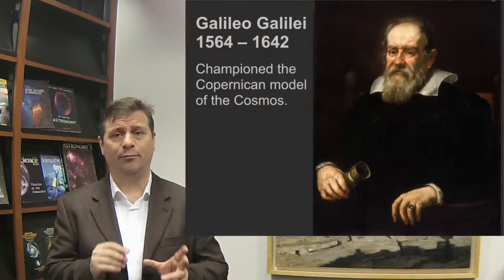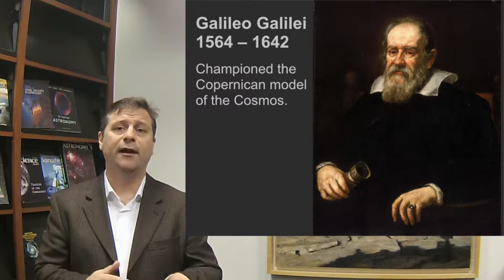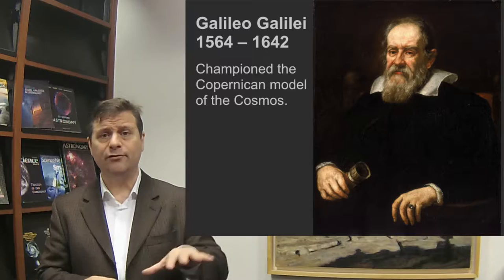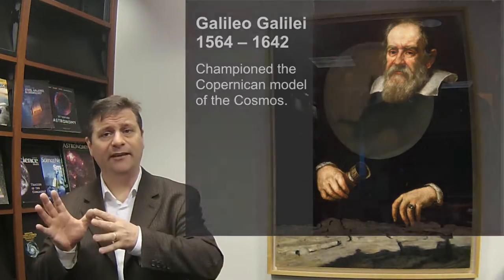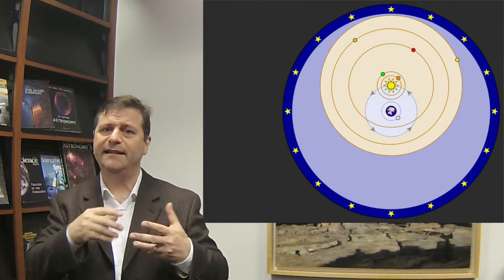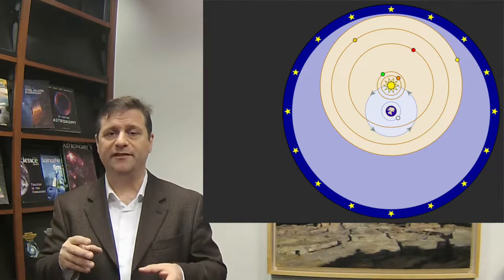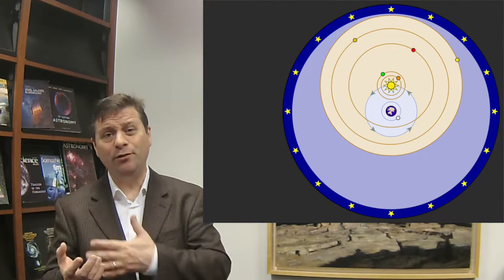The Copernican model had the sun at the center with all the planets going around in circles. Tycho Brahe had the idea that the sun went around the earth. Kepler used Tycho's data in 1609 to deduce the ellipticity of the orbits. But Galileo received this information in 1609 from Kepler and ignored it because Kepler's writing was very opaque. However, we credit Kepler with having discovered the laws.